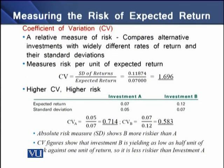The third measure to compute riskiness is the coefficient of variation. It is a relative measure of riskiness because it compares alternative investments with widely different rates of return and their standard deviations. The coefficient of variation measures risk per unit of expected return, and to determine it we divide the standard deviation of returns by the expected return.